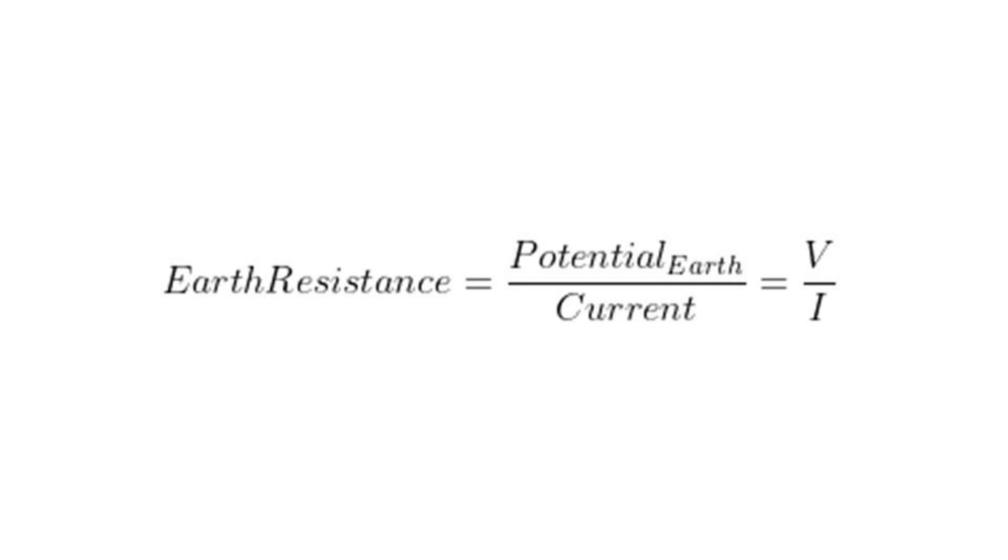Earth resistance is dependent on three main factors: soil resistivity, soil temperature, and the soil depth which the electrode penetrates through.